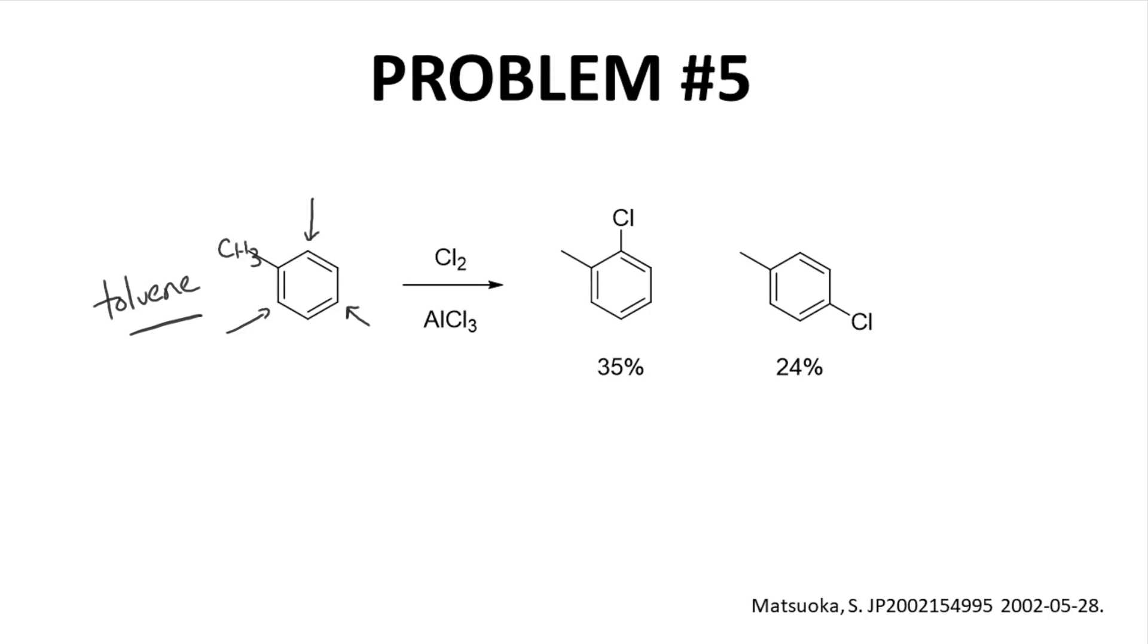Bam! The major product is the ortho product. It's 35% ortho to 24% para. How can you get more ortho than para? That seems impossible. Don't forget that there are two ortho carbons relative to para. Statistically speaking, if sterics weren't part of the picture, you might expect a 2 to 1 ratio of ortho to para. The observed ratio is less than 2 to 1, but it's certainly not all para either.